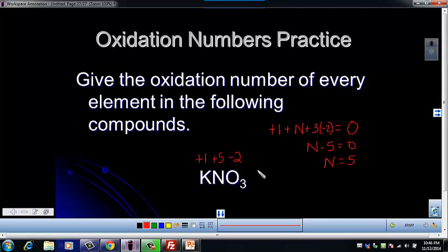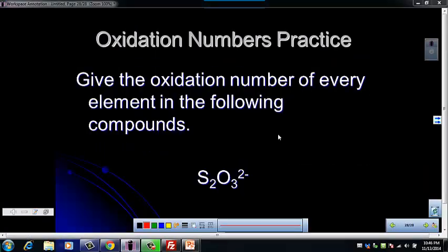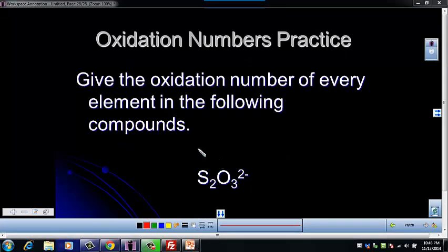Let's try another one. This one looks a little tricky — it's an ion. So remember that we're going to use what we know, and then set the rest equal to the charge on our species. This is our species — this ion — and it has a negative two charge.